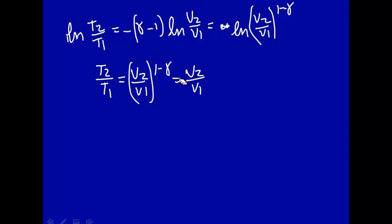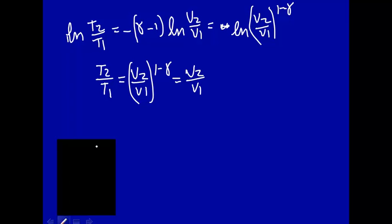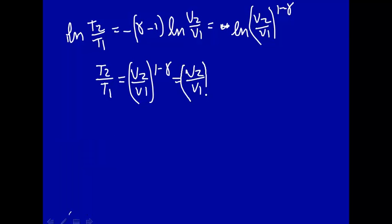sorry, what am I doing here? I don't want to drop my pen. V2 over V1 raised to the 1st power, times V2 over V1 raised to the negative gamma power.